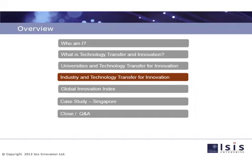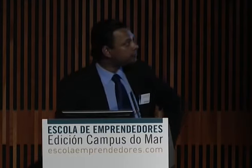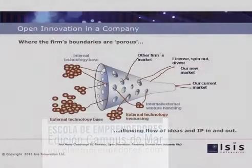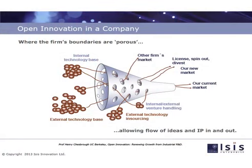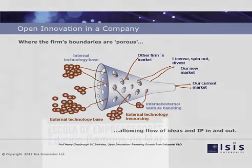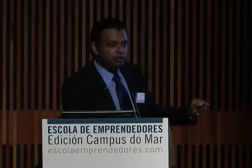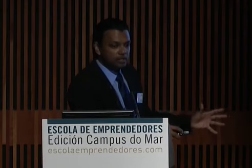Now let's move into the industry side of things and see what industry is doing in terms of innovation, in terms of bringing in technologies under the open innovation umbrella. This diagram was introduced by Professor Henry Chesbrough, who coined the term open innovation about ten years ago. The key point is to represent where the firm's boundaries are porous — there is technology, innovation inflow, as well as outflow through the pores. Here you have the internal technology base, which always used to be the case under the closed system. And then you have the external technology base that you can bring in via technology transfer.